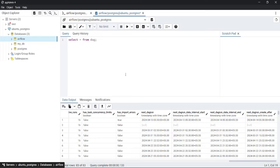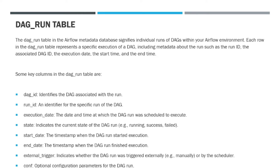Now let's look at the dag_run table. The dag_run table is crucial for tracking the execution history of DAGs, monitoring status, and diagnosing any issues that may arise during execution. It allows Airflow users to analyze past runs, troubleshoot failures, and ensure the smooth functioning of workflows. Some of the columns in the dag_run table are: dag_id, run_id — a unique identifier for the specific run of the DAG — execution_date, which denotes the date and time when the DAG run is scheduled to execute, and state, which indicates the current state of the DAG run: running, success, failed, skipped, or other.